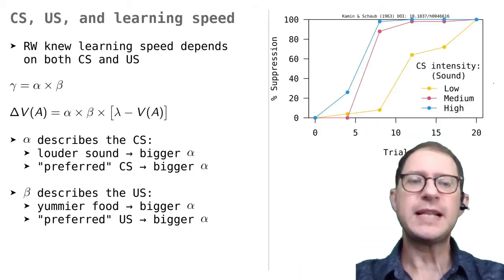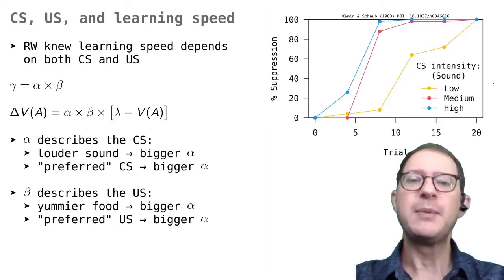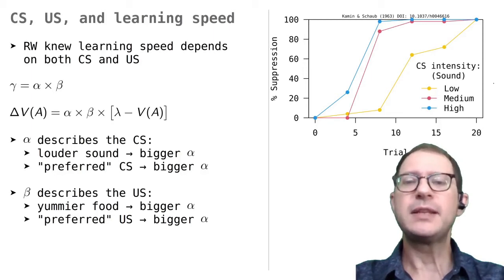The measure of learning used here is the suppression percentage that I introduced in the lesson on blocking. Please review that lesson if you are not sure what the suppression percentage means. The point we want to make here is that learning was slower with the soft sound, and that learning speed increased with the loudness of the sound. With the loudest sound, it took less than 10 experiences for the sound to suppress ongoing activity completely, while with the soft sound it took more than 20 experiences.